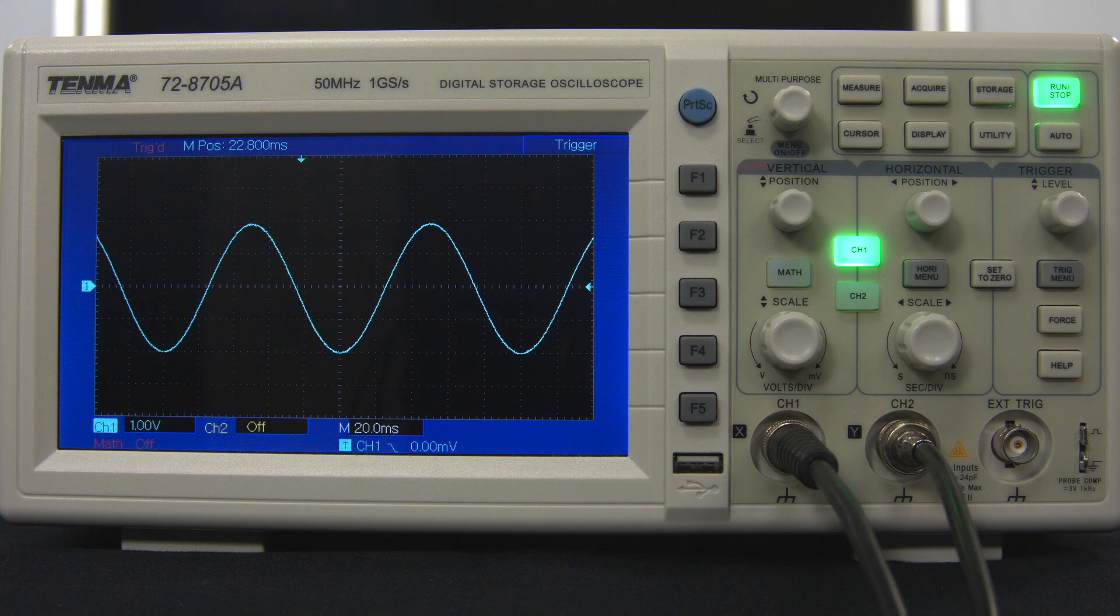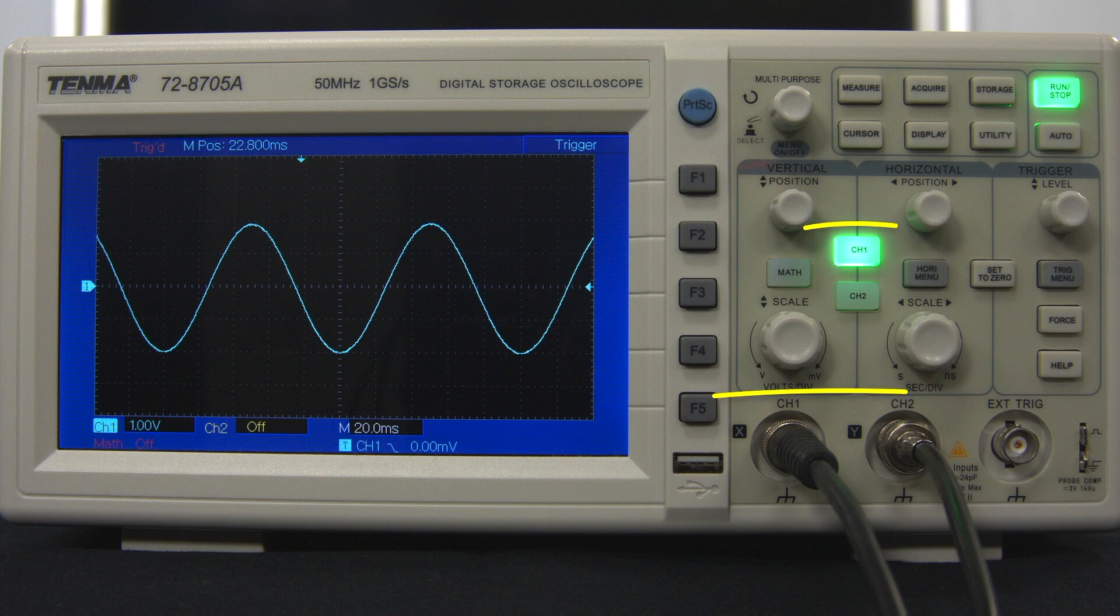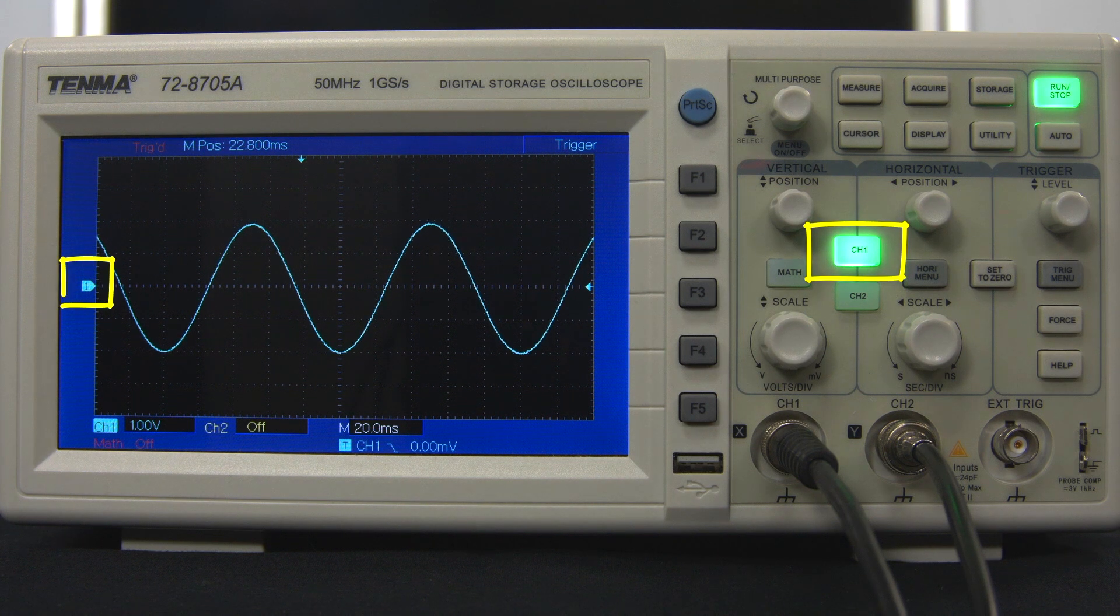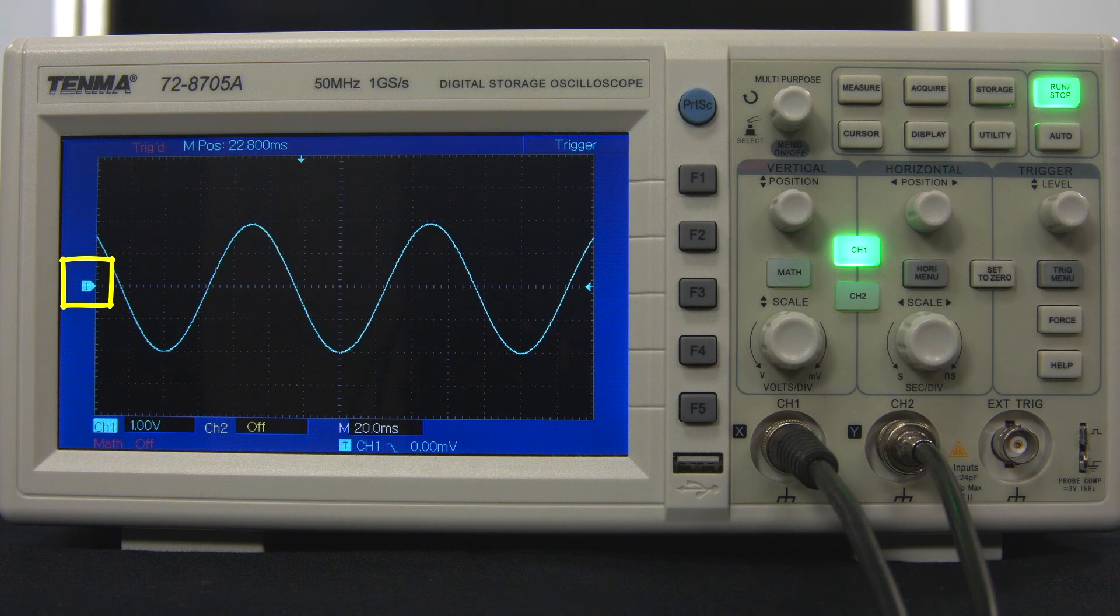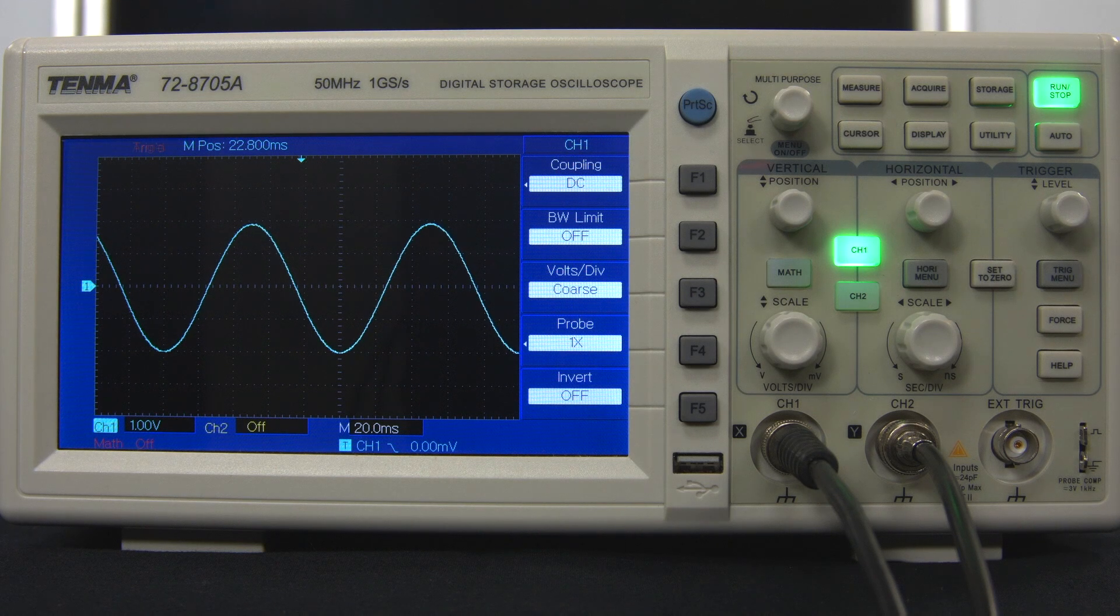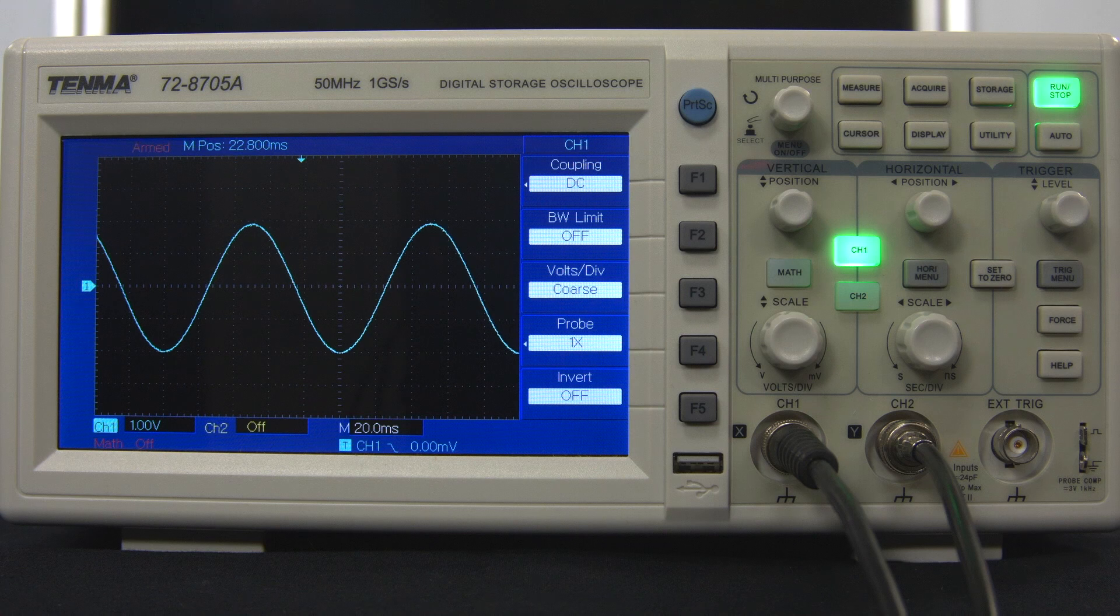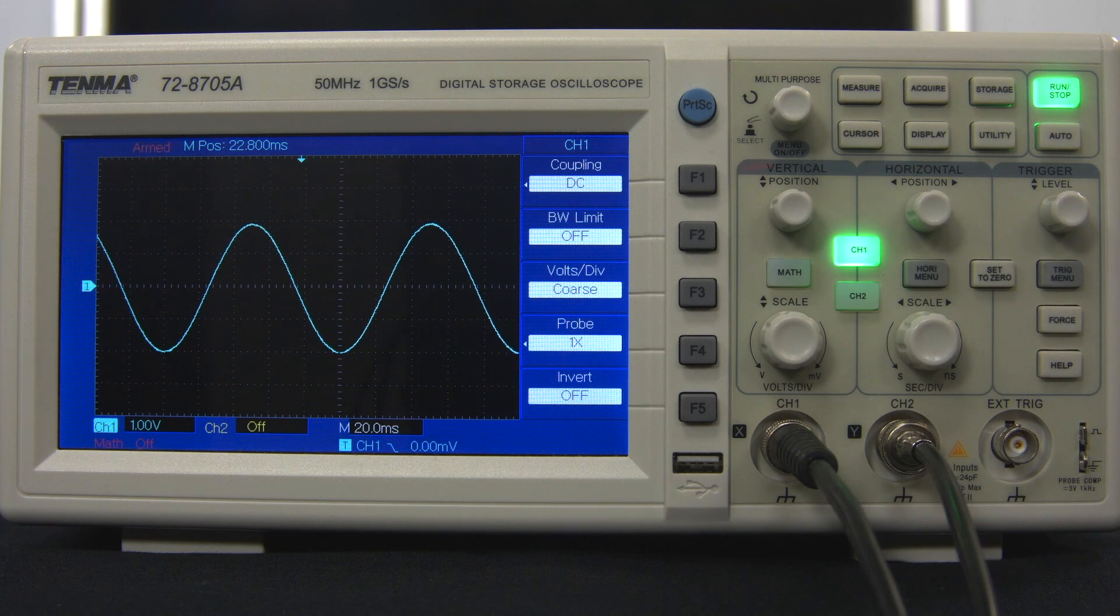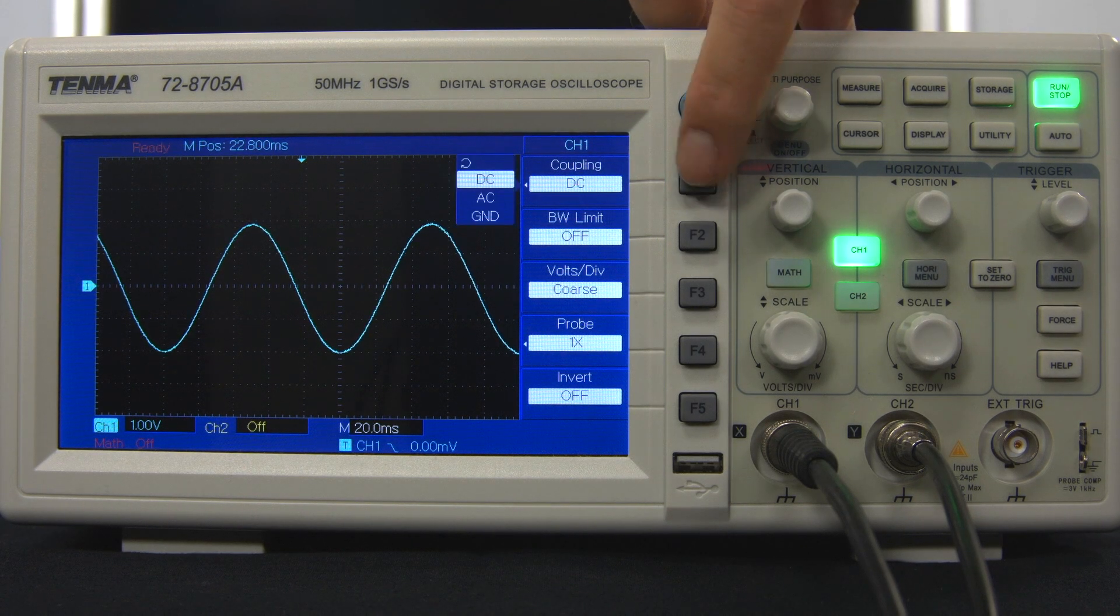This oscilloscope can have two separate signals connected to it, which we call channels 1 and 2. So far, we have been looking at the signal on channel 1, which is coloured blue on the screen, and has the number 1 in its zero voltage marker on the screen. By pressing the channel 1 button, we bring up a menu with options for channel 1 settings. To access a menu item, we press the corresponding function button next to the screen. For example, to change the coupling of channel 1, press the F1 function button.